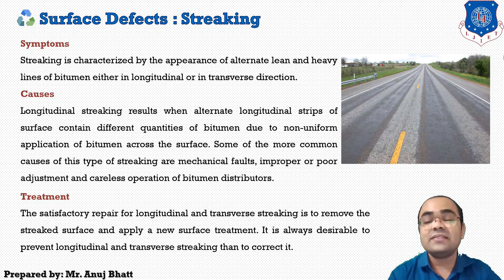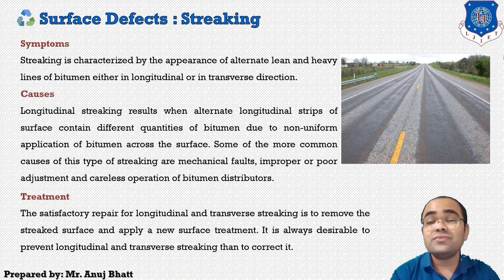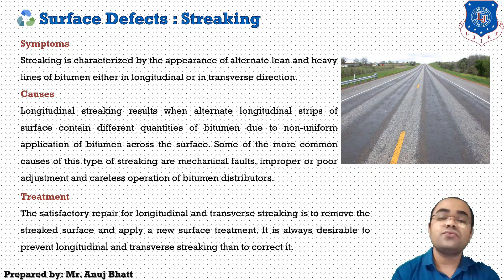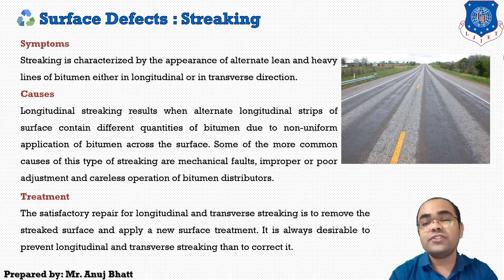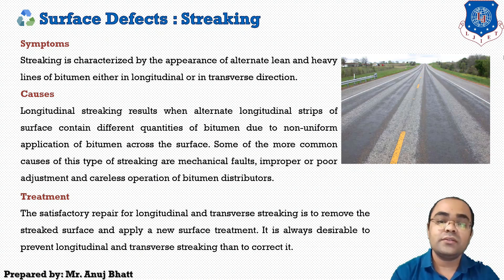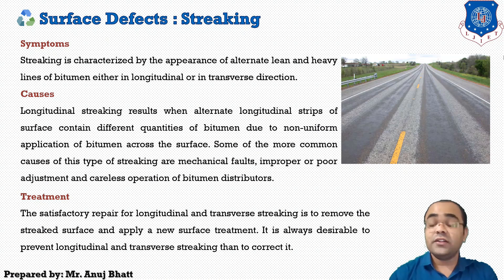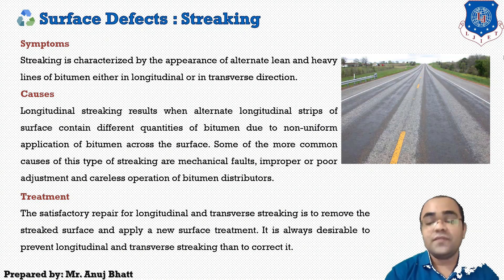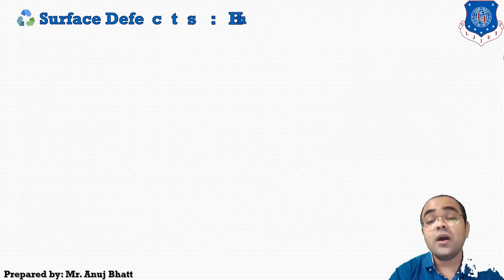How can we treat these defects? For treatment, the satisfactory repair for longitudinal and transverse streaking is to remove the affected surface and apply a new surface treatment. It is always desirable to prevent longitudinal and transverse streaking rather than to correct it. Whenever mechanical equipment is used for spraying bitumen, the manufacturer's recommendations for the bitumen distributor should be carefully adhered to. The next surface defect is the hungry surface.